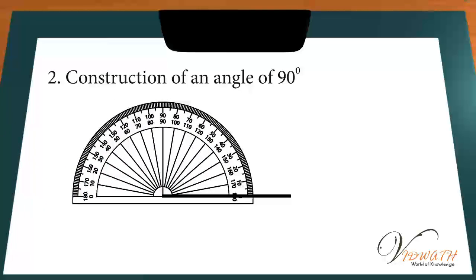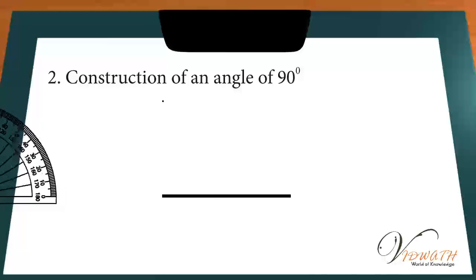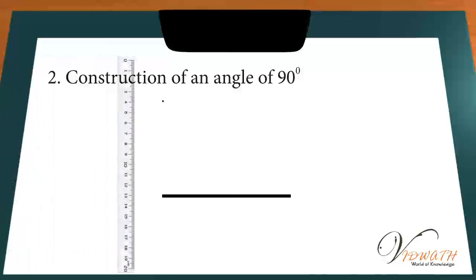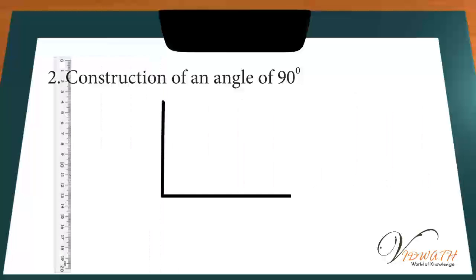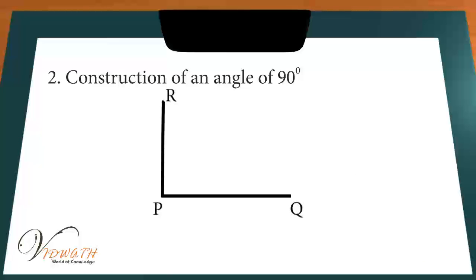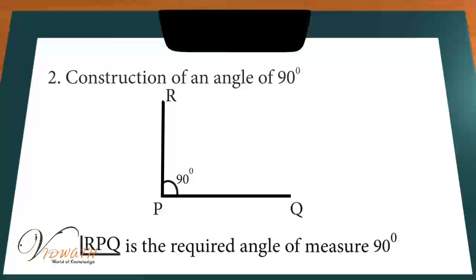Step 2: Start from 0 degrees and move up to 90 degrees and mark a point R at 90 degrees. Step 3: Join PR. Angle RPQ equals 90 degrees, which is the required angle.